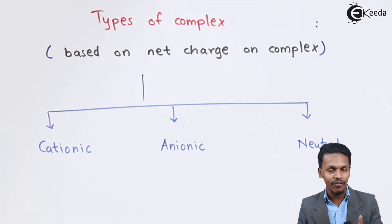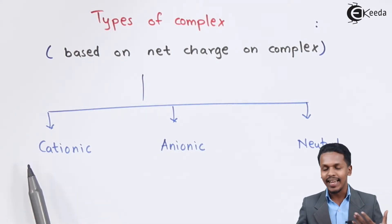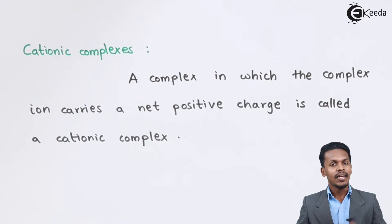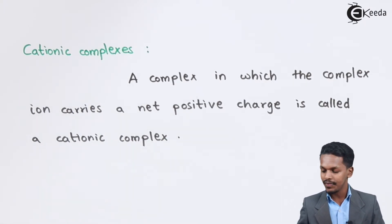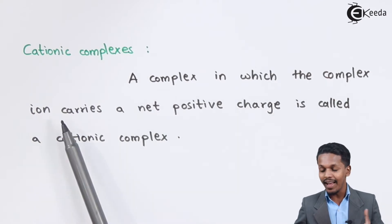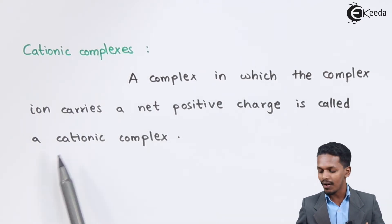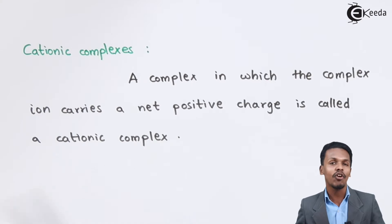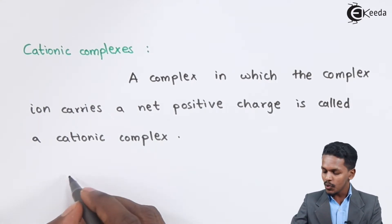Let us understand the first one, that is cationic complex. A cationic complex is a complex in which the complex ion carries a net positive charge.